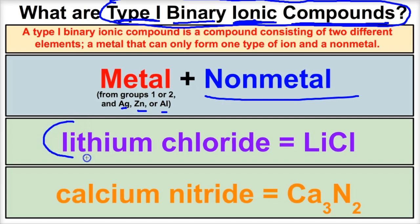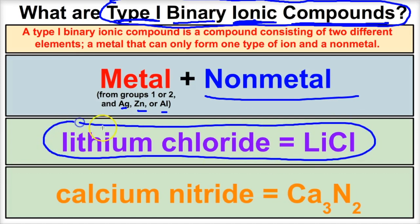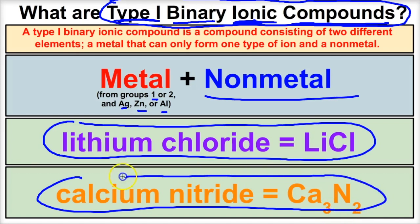Let's take a look at a couple of examples. Lithium chloride is a type 1 binary ionic compound. Why? Because we have a metal and we have a non-metal — we only have two different elements, lithium and chlorine. One of them is a metal and one is a non-metal, and specifically this metal comes from group 1. Same with calcium nitride — calcium comes from group 2 on the periodic table, it's bonded to nitrogen which is a non-metal, so you end up with a type 1 binary ionic compound.